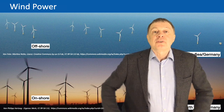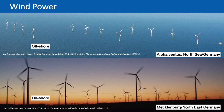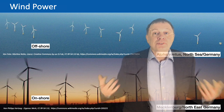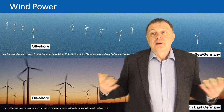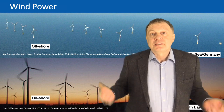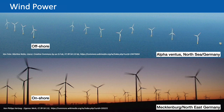Below you can see a big wind farm onshore close to the coast of the Baltic Sea in the northeast of Germany. On top you see the offshore wind park Alpha Ventus, which is in the North Sea in Germany and produces wind power at sea.